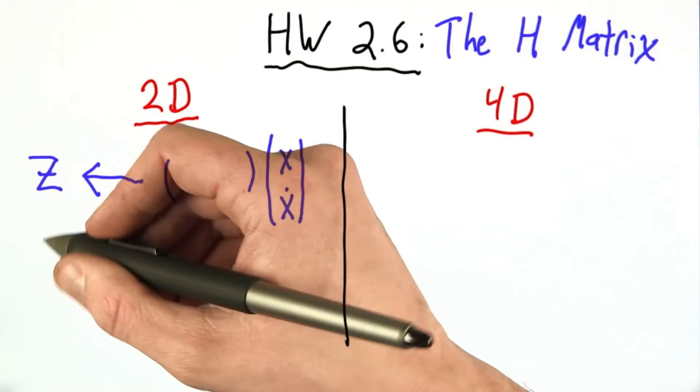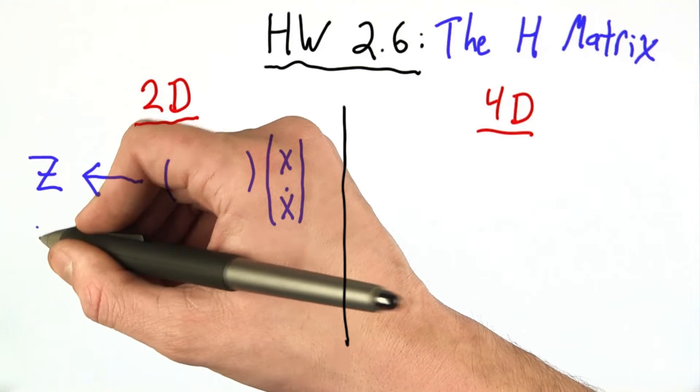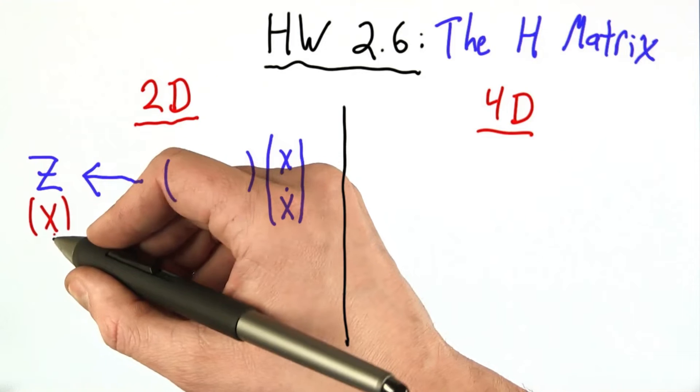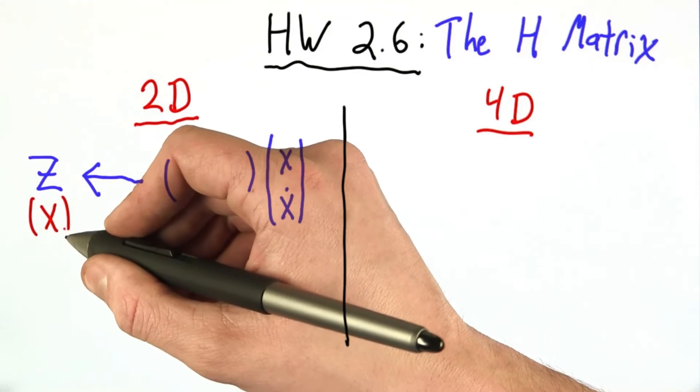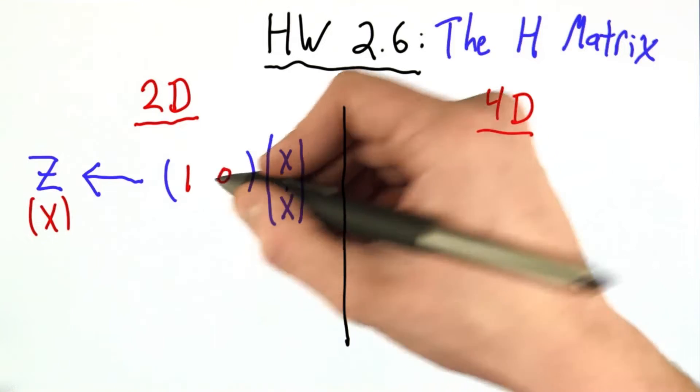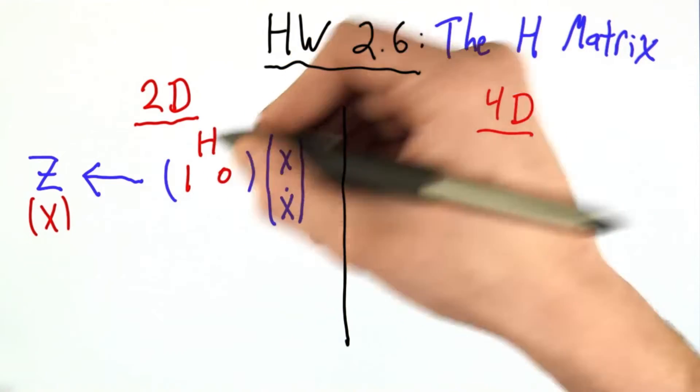And in the 2D case, the measurement was just x, just the x coordinates. We can think of this as a 1 by 1 vector or a 1 by 1 matrix. And the matrix we used to do that was this one. That was our H matrix.